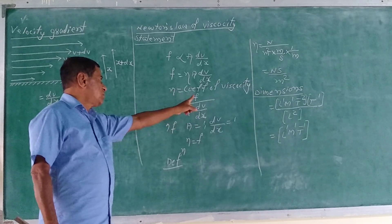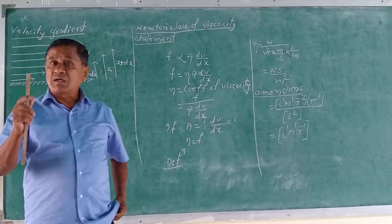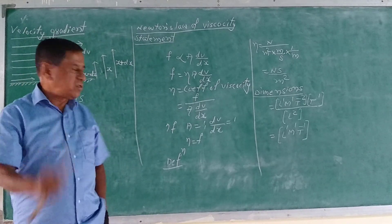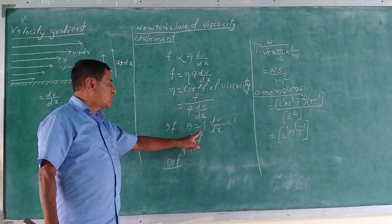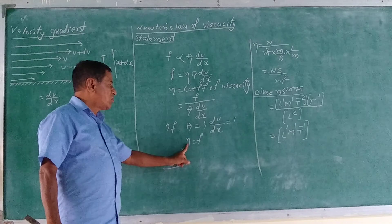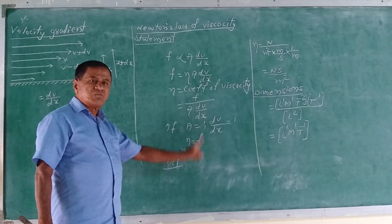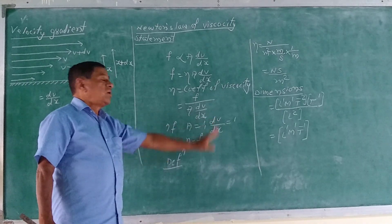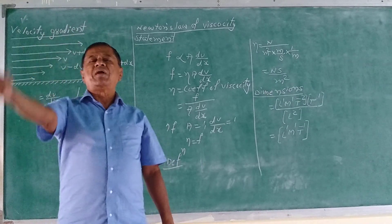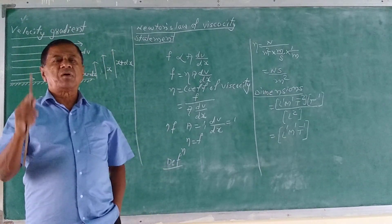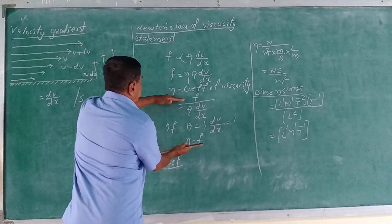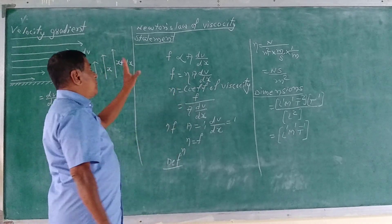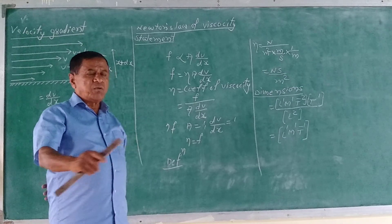The coefficient of viscosity of the liquid is defined as the viscous force per unit surface area per unit velocity gradient. This definition comes from Newton's law of viscosity.